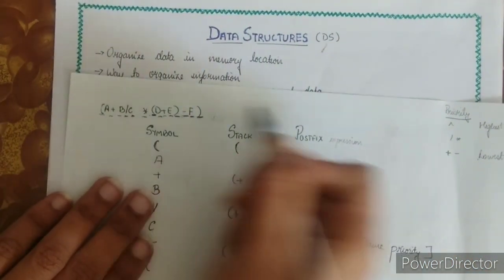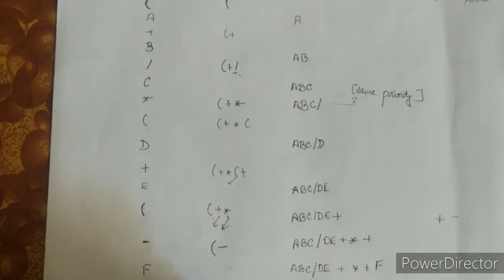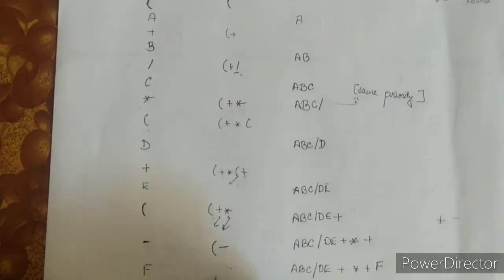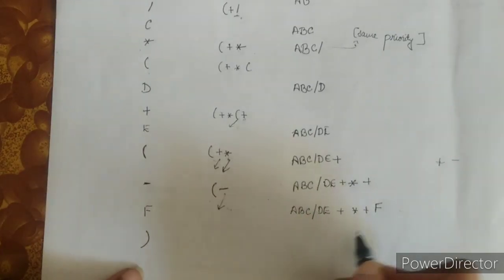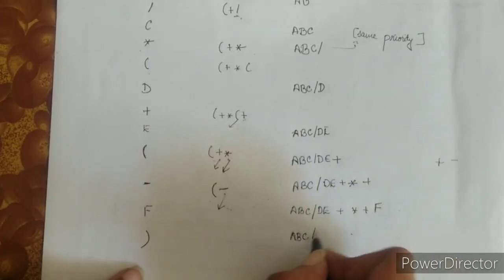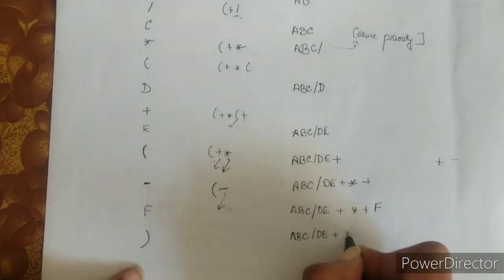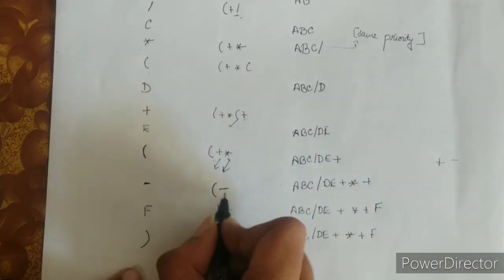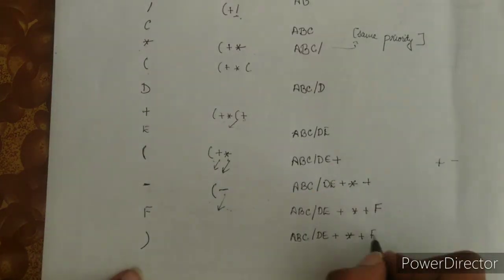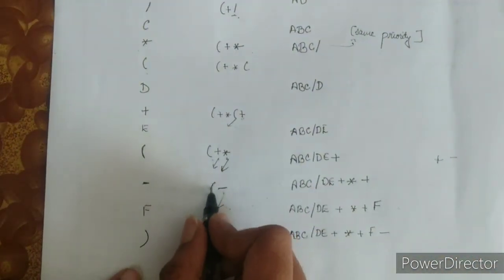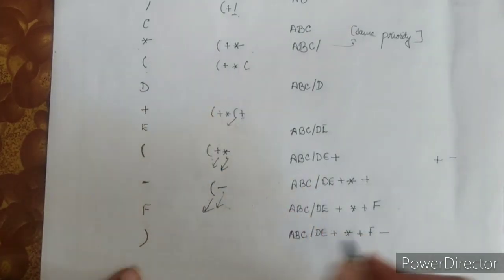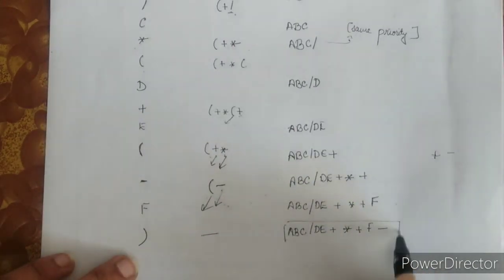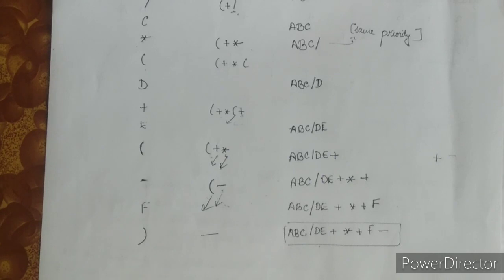Finally, you have the right parenthesis. For a right parenthesis, pop all elements present in the stack and add them to the postfix expression. So the subtraction operator is popped and added — giving postfix: a, b, c, slash, d, e, plus, star, plus, f, minus. The remaining opening parenthesis is also popped and discarded. This is the final postfix expression that we require.